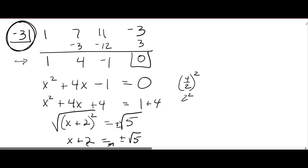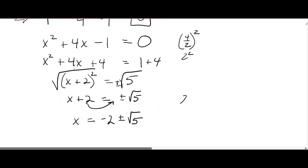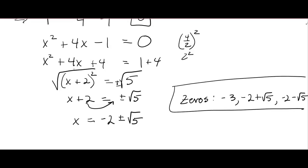So what are the 0s? Well, there was the one we found with the big circle around it, negative 3. So the 0s are negative 3, and then we have negative 2 plus the square root of 5, and negative 2 minus the square root of 5. So these 0s here, they're not rational, but they're real. They're great little numbers. They're great 0s.